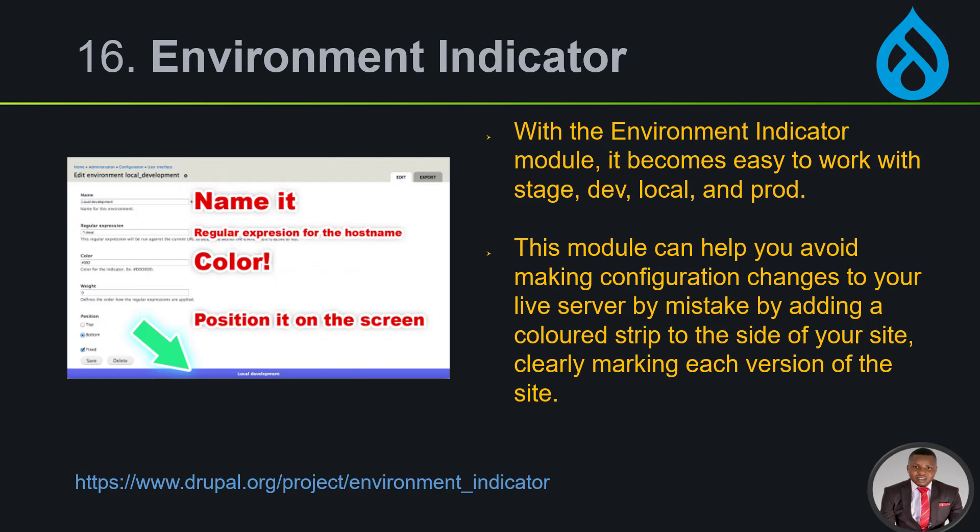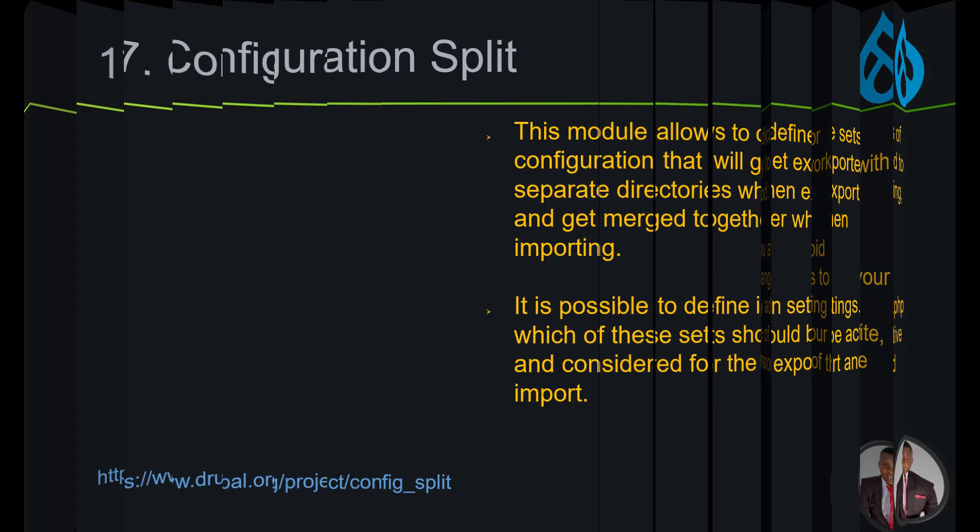Number 16 is Environment Indicator — very important. If you've ever updated a live site thinking you were updating dev, that is really risky. With the Environment Indicator module, it becomes easy to work with stage, dev, local, and production environments. It helps you avoid making configuration changes to your live server by mistake by adding a color strip to the side of your site, clearly making each version visible. This is only visible to admin users.